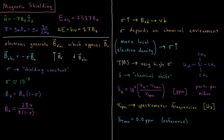So the stronger our magnetic field gets, the stronger our electrons are going to oppose it with their own magnetic field. So typically, sigma is on the order of 10 to the minus fifth, so about 10 parts per million that our electrons will oppose a given magnetic field,